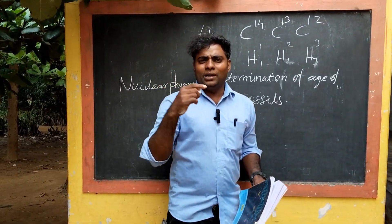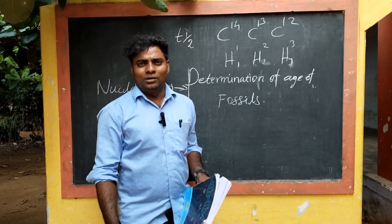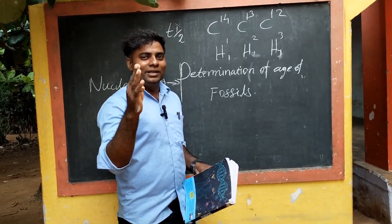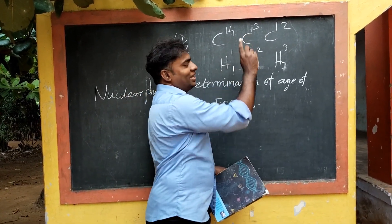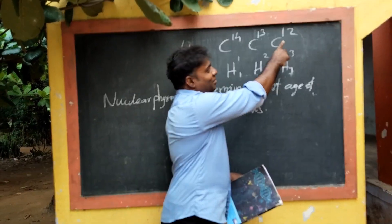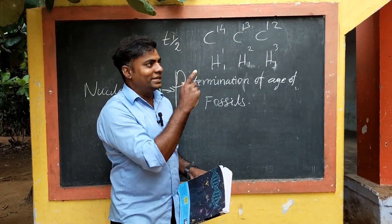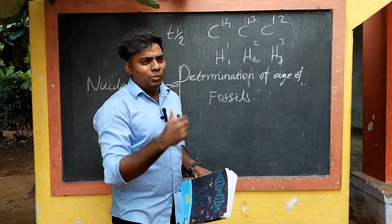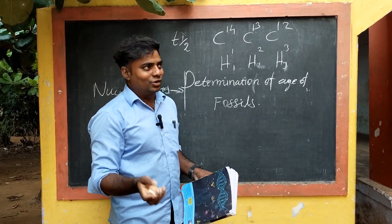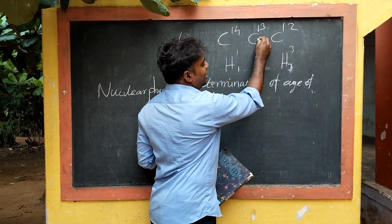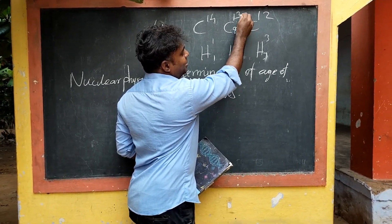Now, if we have 3 isotopes of carbon — carbon-14, carbon-13, carbon-12 — we are not going to be able to change the carbon. If we are going to change the carbon, we will be able to change it.